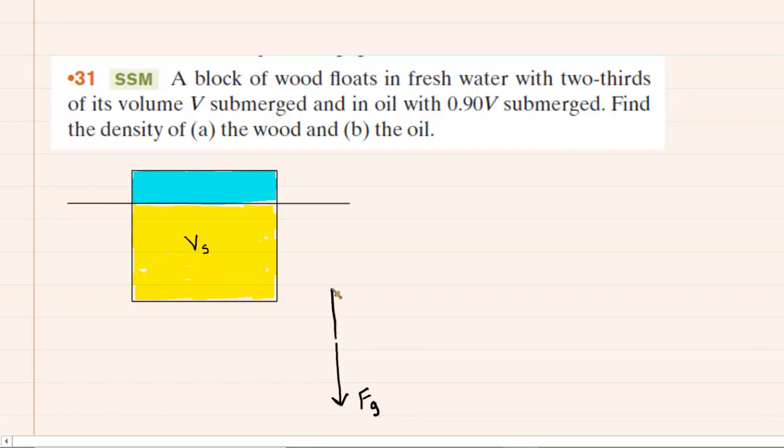would be balanced by an upward buoyant force of equal magnitude. So, in other words, the buoyant force, F sub B, is going to equal the gravitational force, F sub G.